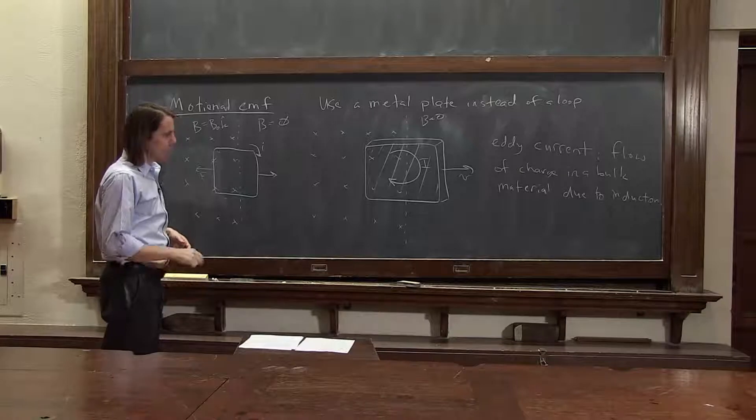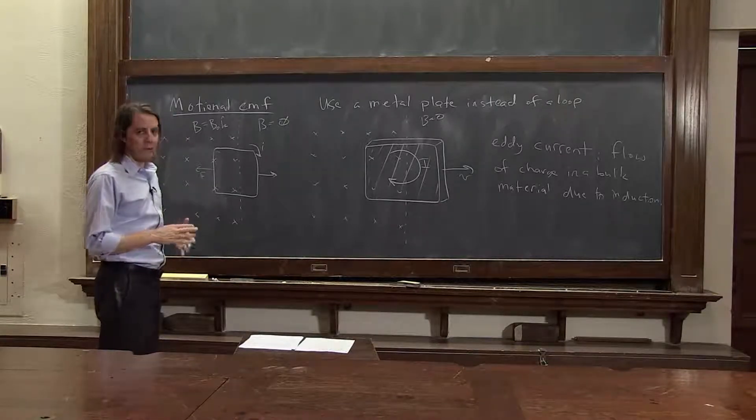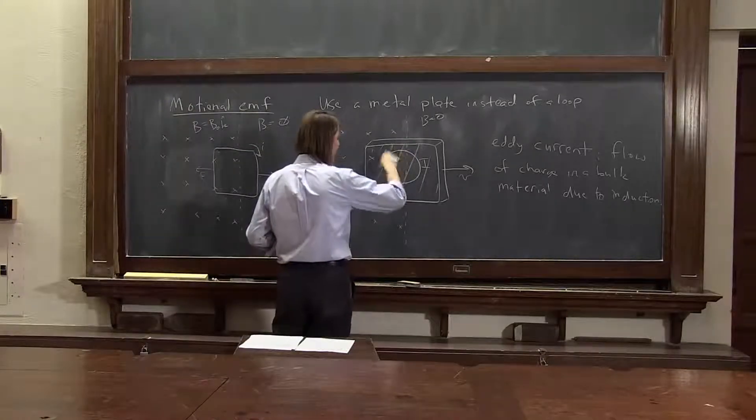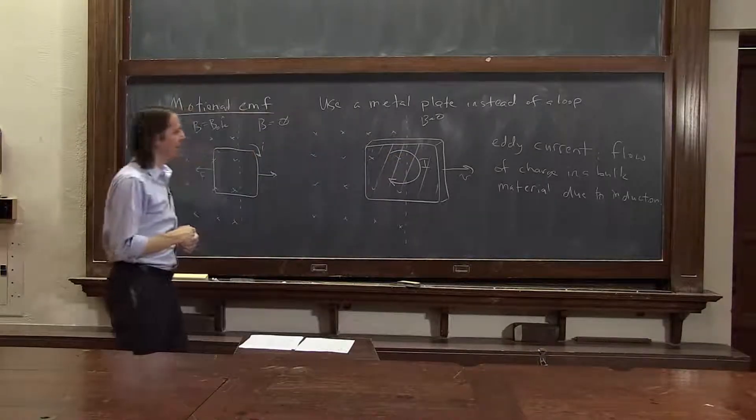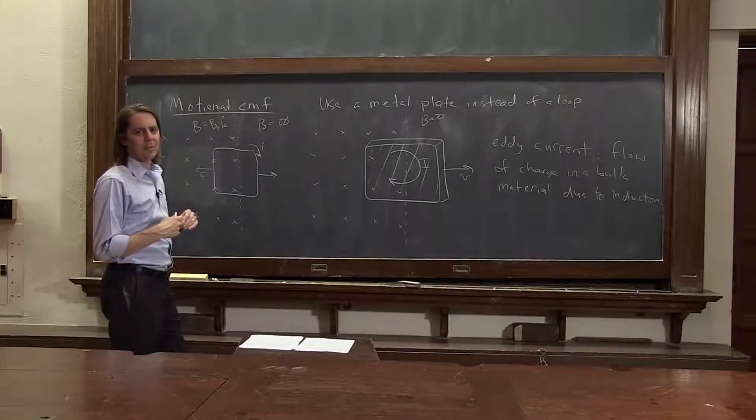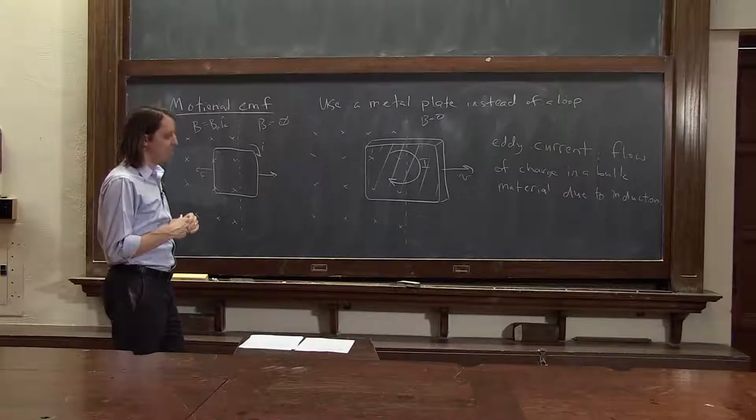We could also realize then, so it's hard to really do any detailed calculations of eddy currents, because the flow of the charge and the current is so complicated. You can't really define exactly what it looks like. But there is one thing you can quantitatively think about, is you can figure out how much energy you're dissipating.